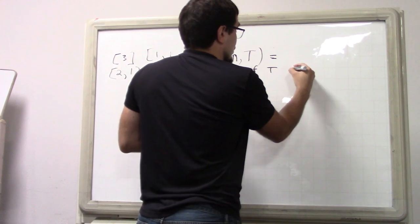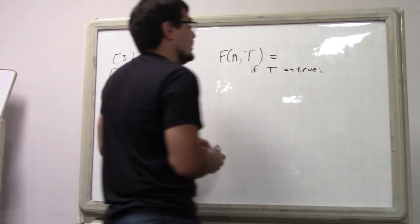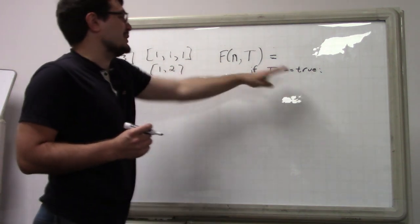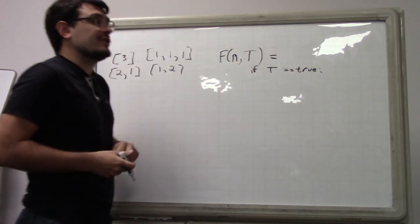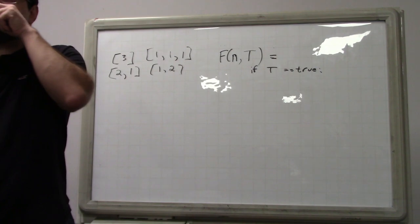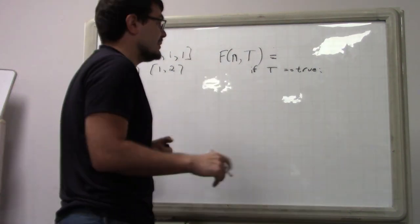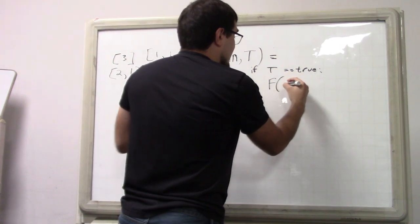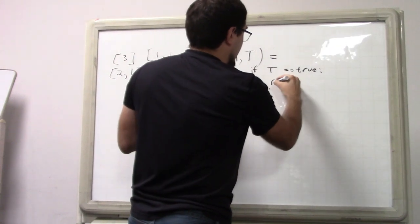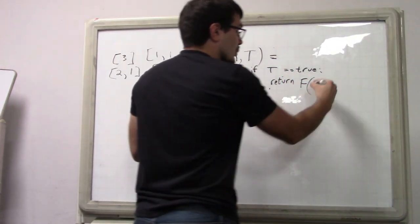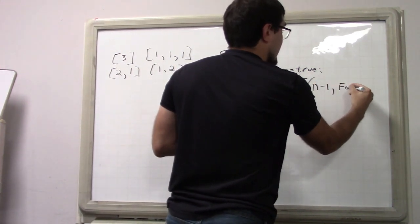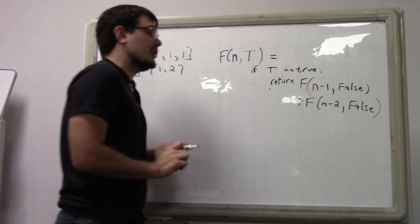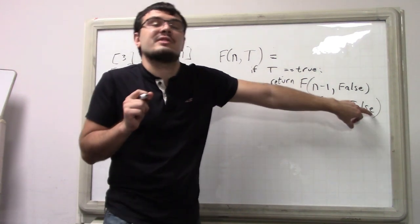Let's write this recurrence. You have two cases. If t equals true — you are tired — then on your next move you're only allowed to climb one or two steps and you will not be tired. So you return F(n-1, false) plus F(n-2, false): however many ways there are to climb n minus one steps while not tired, plus however many ways to climb n minus two steps while not tired.